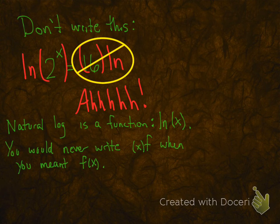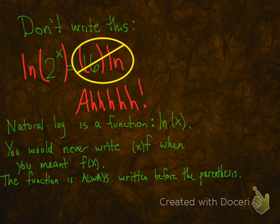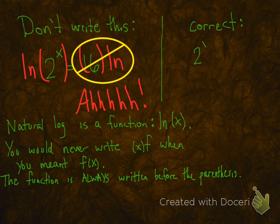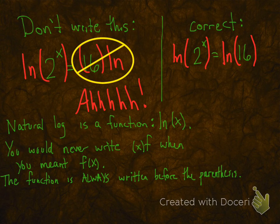You would never write parentheses x of f or something like that when you really mean f of x. You always write the function before the parentheses. So here is how it should look. If you want to solve 2 to the x is 16, put the natural logs on the left side, and then the parentheses, and then 2 to the x, and natural log, parentheses, 16.